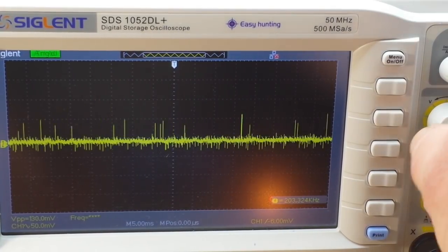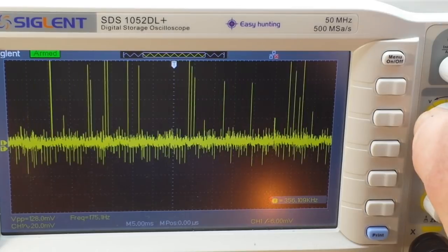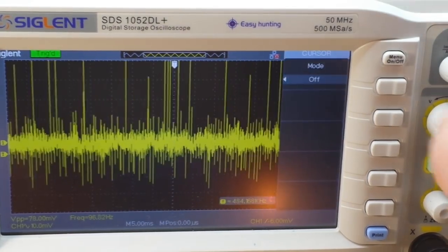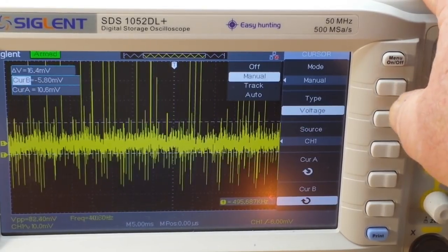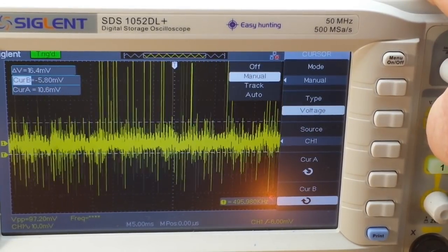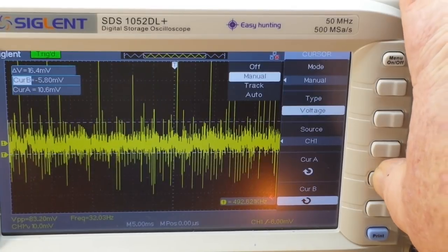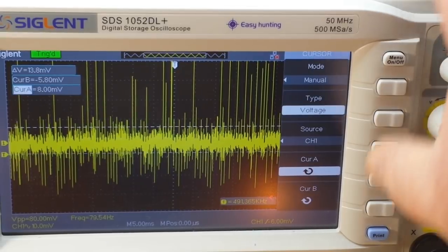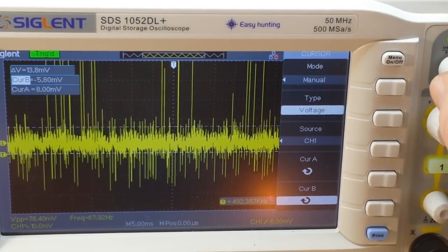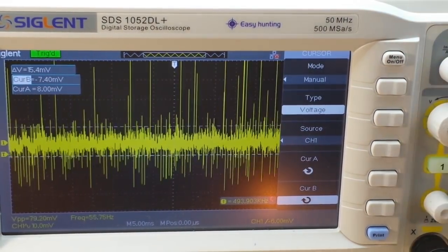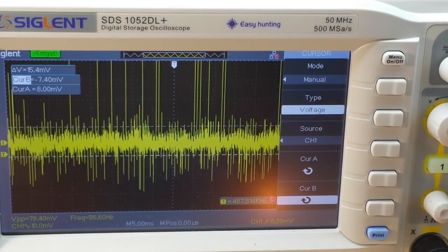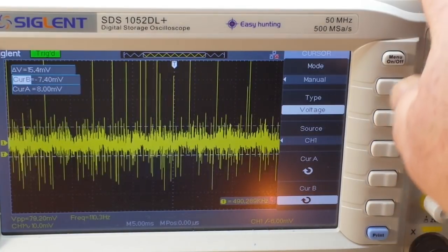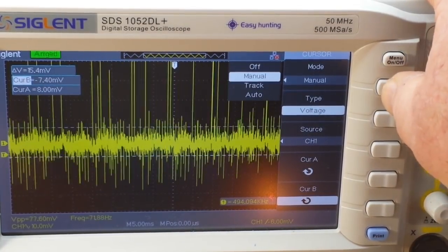If we zoom in a little bit more, maybe a little bit more, alright now we'll grab our cursors for manual and voltage. We will figure out what our ripple is. So it looks like our ripple is 15.4 millivolts, and in my book that is quite acceptable. Very nice.